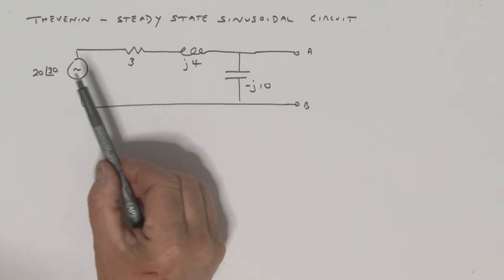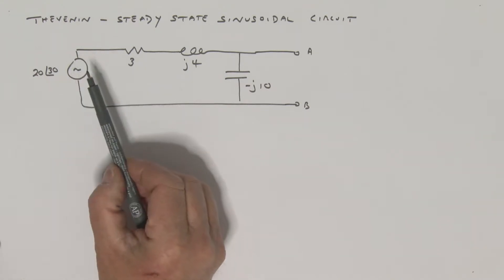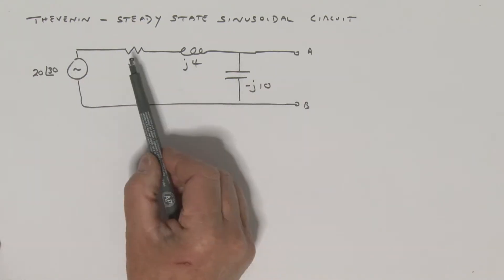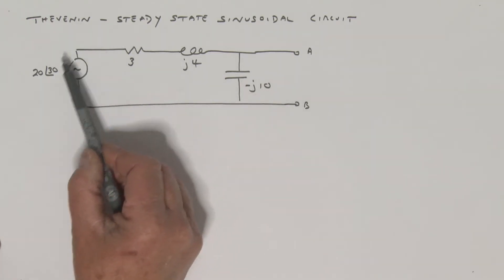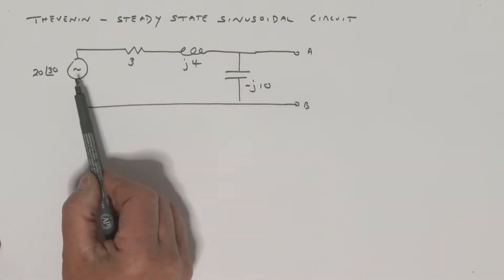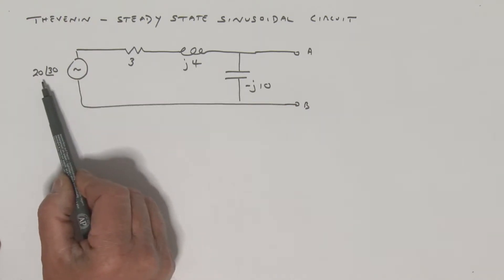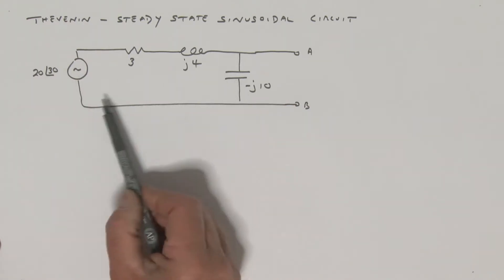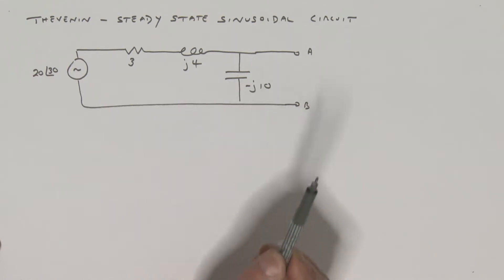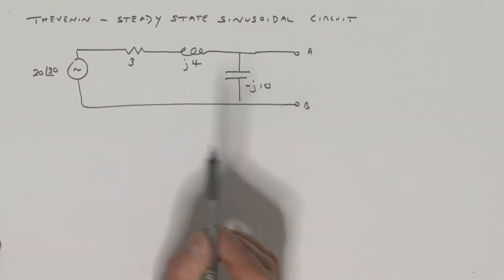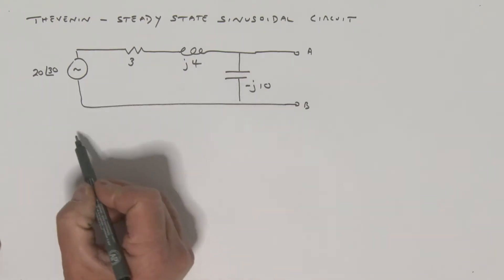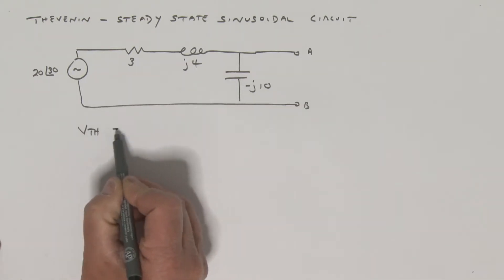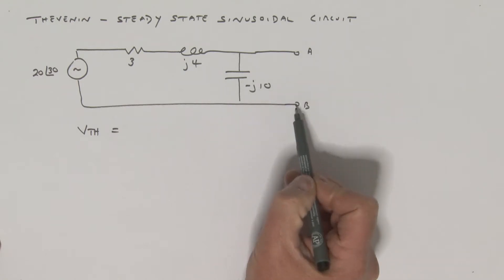What I'd like to look at today is Thevenin's Theorem, looking at Thevenin's Theorem of an AC circuit where we have a sinusoidal source. We're going to consider RMS values throughout. Let's think about how we're going to do this. The Thevenin voltage, V-Thevenin — what is that? Well, it is the open circuit voltage.